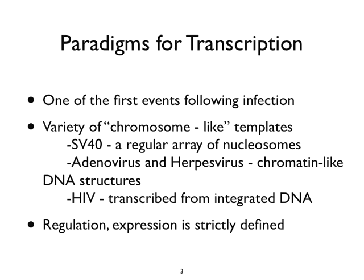Adenoviruses and herpesviruses, both linear molecules in the virus, have chromatin-like DNA structures but they're not chromatin per se. Rather, they are decorated with histones and other host proteins when they come into the nucleus, but they don't form a true chromatin-like structure. Our friend HIV, which is RNA when it starts but DNA when it's doing its business, is transcribed from integrated DNA — that virus RNA genome has been made into a double-stranded DNA template, integrated into the host, and from there new virus genomes and transcripts are made.